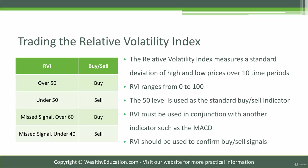If you miss the buy signal at 50, the next buy point is 60. And if you miss the sell signal, or going short signal, at 50, the next sell opportunity is when the RVI drops under 40.